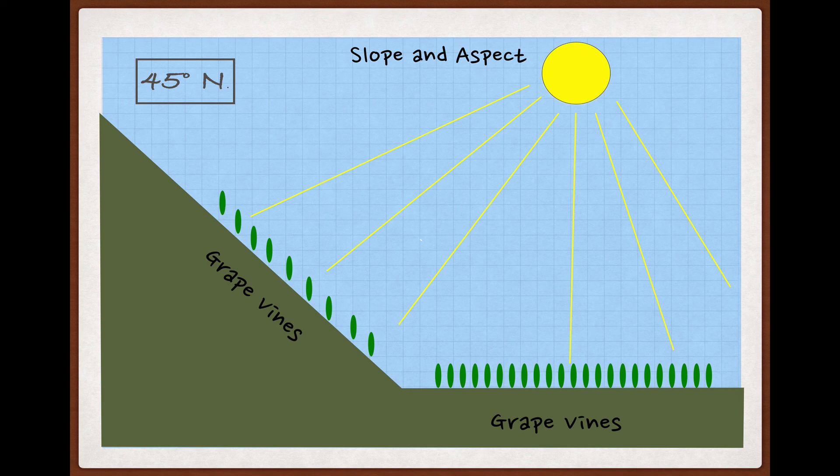At the beginning of summer, June in the northern hemisphere, but December if we're down in the south, the sun is riding high in the sky and all of the grapes, no matter where they are, will be getting lots and lots of sunshine.